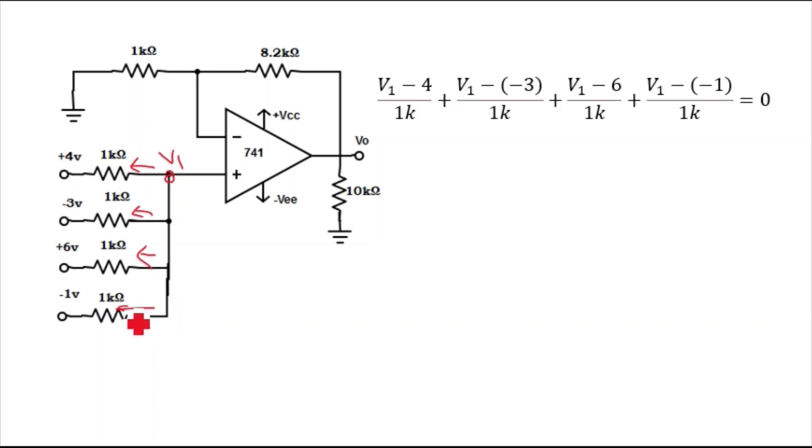The potential at this terminal: V1 minus 4 divided by 1k. Since this whole branch will have the same potential, V1 minus (-3) divided by 1k. Then for next branch, V1 minus 6 divided by 1k. Again V1 minus (-1) divided by 1k. This equals 0. When we solve this, we will get V1 equals 6 volt.